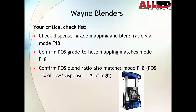The reason for that is the way the point of sale record works — it says the blended product is a blend of my low product and my high product, and it's a percentage of my low. So again, it would be 70 in the POS where in the dispenser it would have been 30.